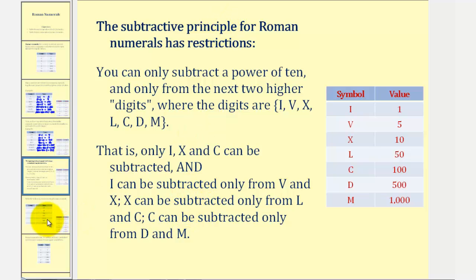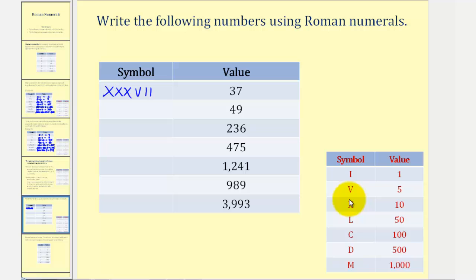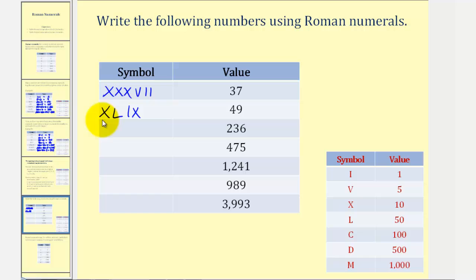Let's take a look at some examples of forming Roman numerals from the Arabic numerals. For thirty-seven, we'll start with thirty — that would be three X's. And then for seven, we would have a V followed by two I's. For forty-nine, we will use the subtraction principle, but we can't use an I and an L. We'll start with the forty by putting an X before the L — that would be fifty minus ten, so we'll use XL, that's forty. And then for nine, we'll use an I before an X for ten minus one. So here's forty-nine. For two hundred thirty-six, we'll start with two hundred, which is two C's, for thirty we'll use three X's, and then for six we'll use a V followed by an I.